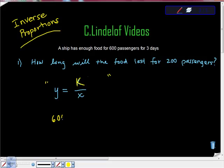So I say, okay, when I have 600 passengers, I have this constant of variation over three days. So this seems kind of silly at first, but if you can do this, it all gets really easy.